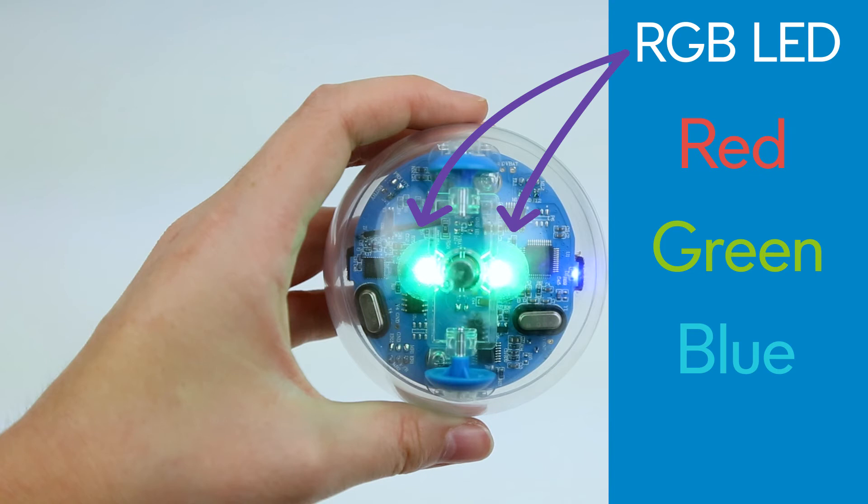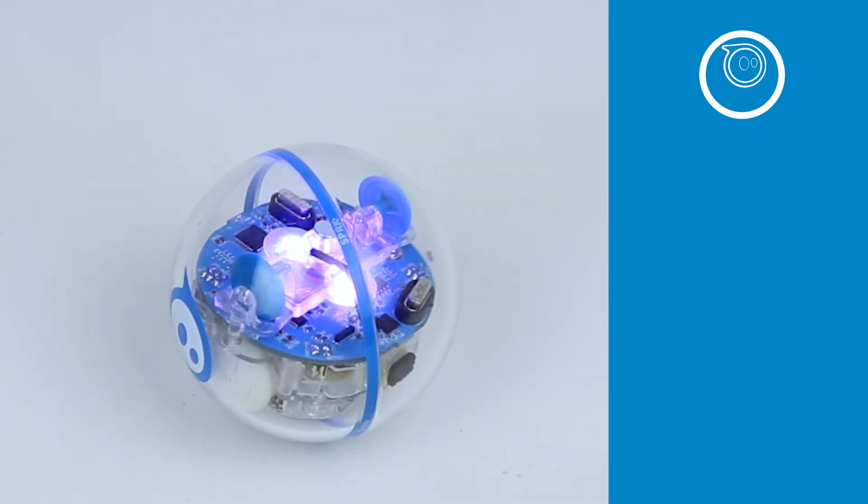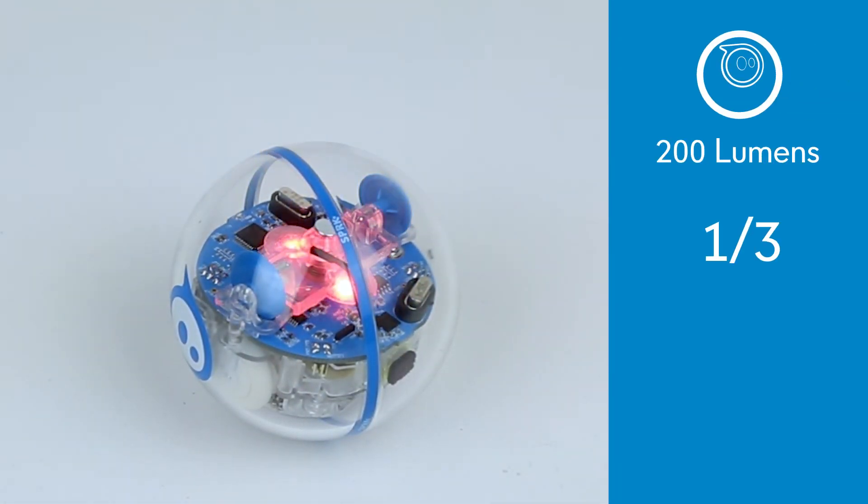Each LED has an opaque diffuser above them to spread the light and make Sphero glow to produce almost any color. At full brightness these main LEDs output 200 lumens of light, about one-third that of a 60 watt light bulb.